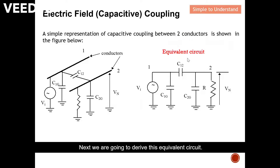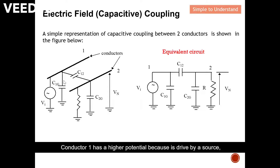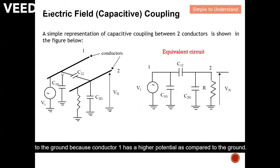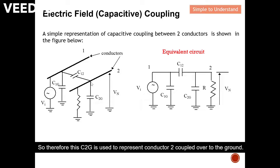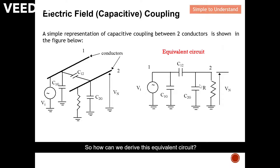Next, we are going to derive the equivalent circuit. These are the two conductors — conductor 1 and conductor 2. Conductor 1 has a higher potential because it is driven by a source. Besides coupling from conductor 1 to conductor 2, conductor 1 also couples to the ground because conductor 1 has a higher potential compared to the ground. When conductor 1 couples to the ground, it can be represented by capacitor C1G. C1G represents coupling from conductor 1 to ground. Conductor 2 also has a potential higher than the ground, so C2G is used to represent conductor 2 coupled over the ground. Normally, there is also a resistor connected to conductor 2.